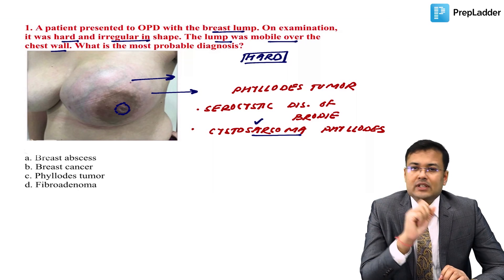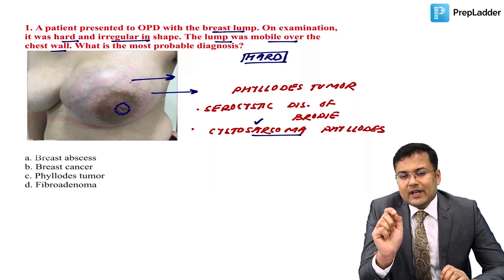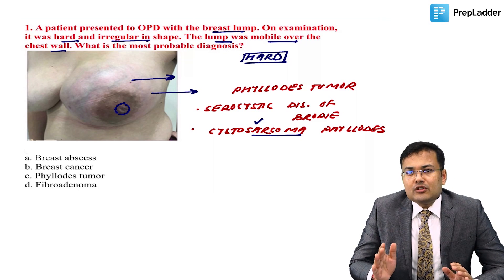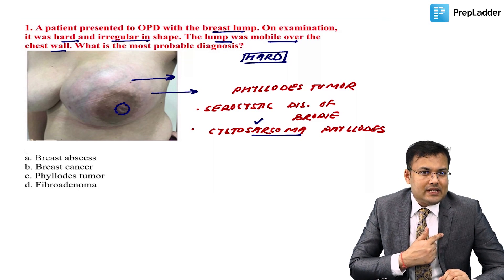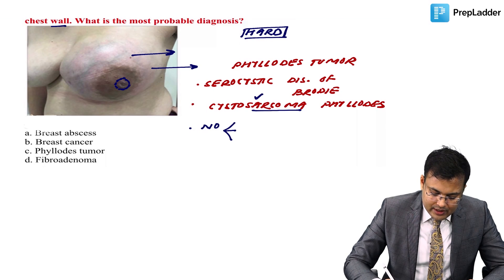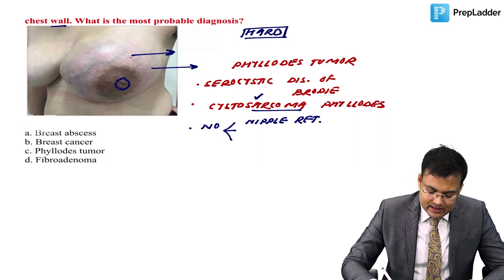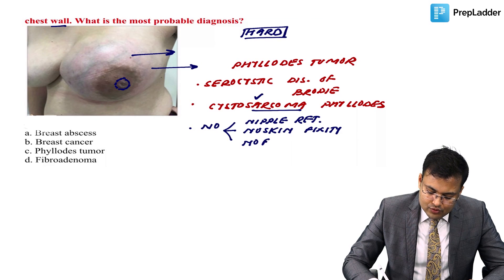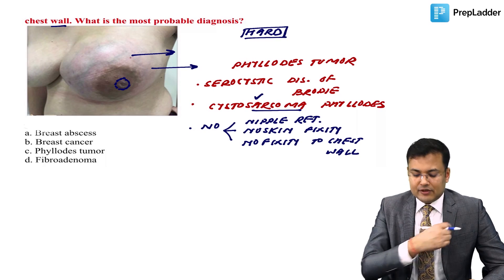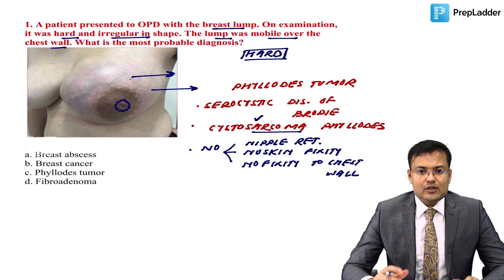Three structures are not invaded or involved by the tumor: the nipple, breast skin, and chest wall. So in Phyllodes tumor there is no nipple retraction, no nipple ulceration, no skin fixity, and no fixity to chest wall. You can pinch or lift the skin over the surface, and the tumor is mobile over the chest wall.